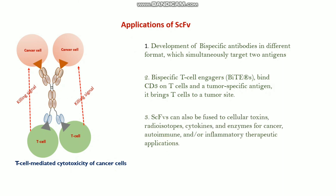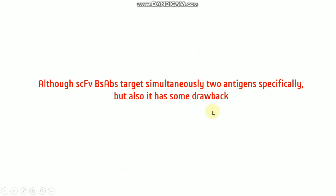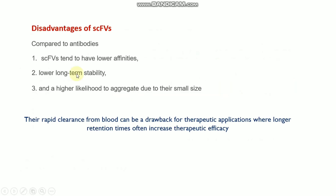Another important function of ScFb is that it can also be fused to cellular toxins, radioisotopes, cytokines, and enzymes for cancer, autoimmune, and inflammatory therapeutic applications. Although ScFb bispecific antibody simultaneously targets two antigens specifically, it also has some drawbacks. ScFb tends to have lower avidity and lower long-term stability, and a higher likelihood to aggregate due to its small size. Their rapid clearance from the blood can be a drawback for therapeutic applications where longer retention times often increase therapeutic efficacy. These are the main disadvantages of ScFb — it has weaker binding with the antigen and can easily be eliminated from the body.